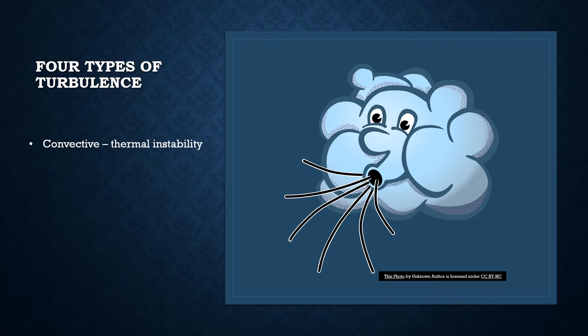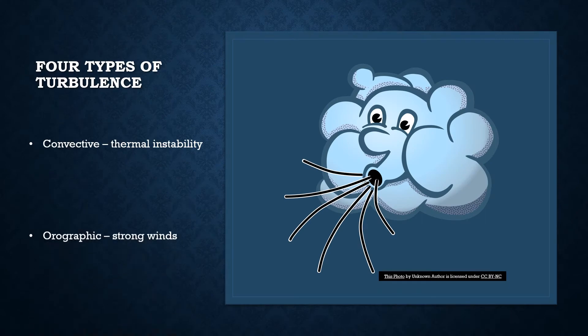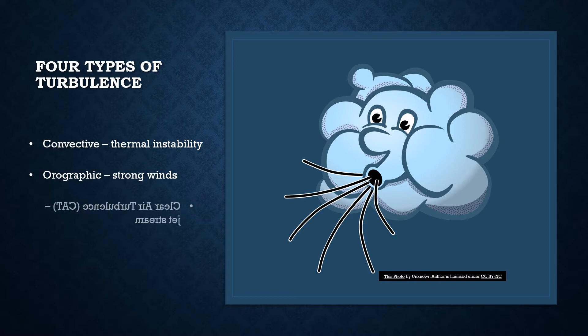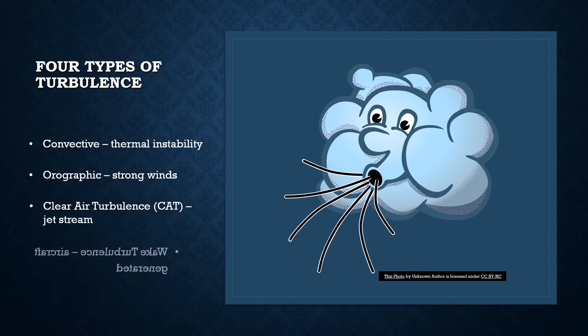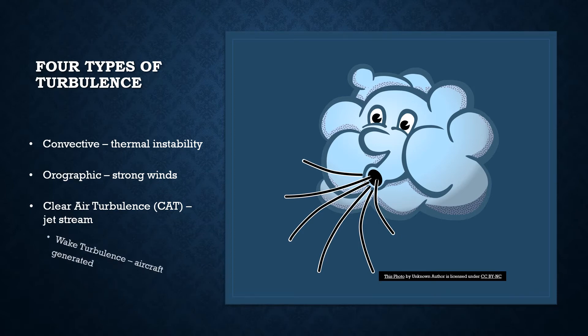There are four types of turbulence. The first is convective, which is turbulence caused by a thermal instability of hot and cold air that creates thunderstorms. Next is orographic, which refers to turbulence generated by strong winds over terrain such as mountains or obstacles. Clear air turbulence is usually located above and below the jet stream, which is a narrow band of extremely strong winds, impossible to detect on radar.